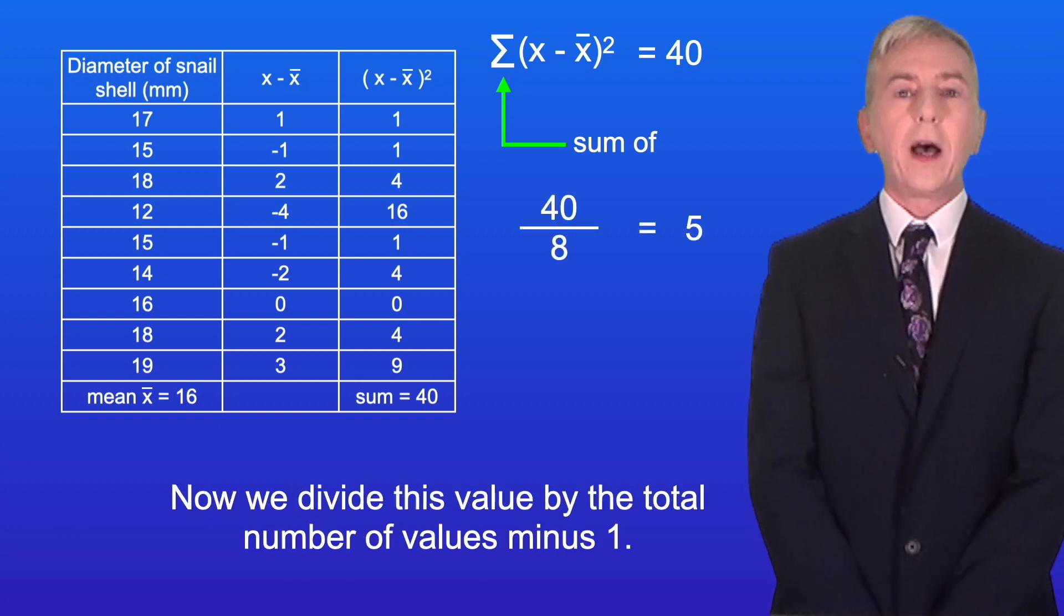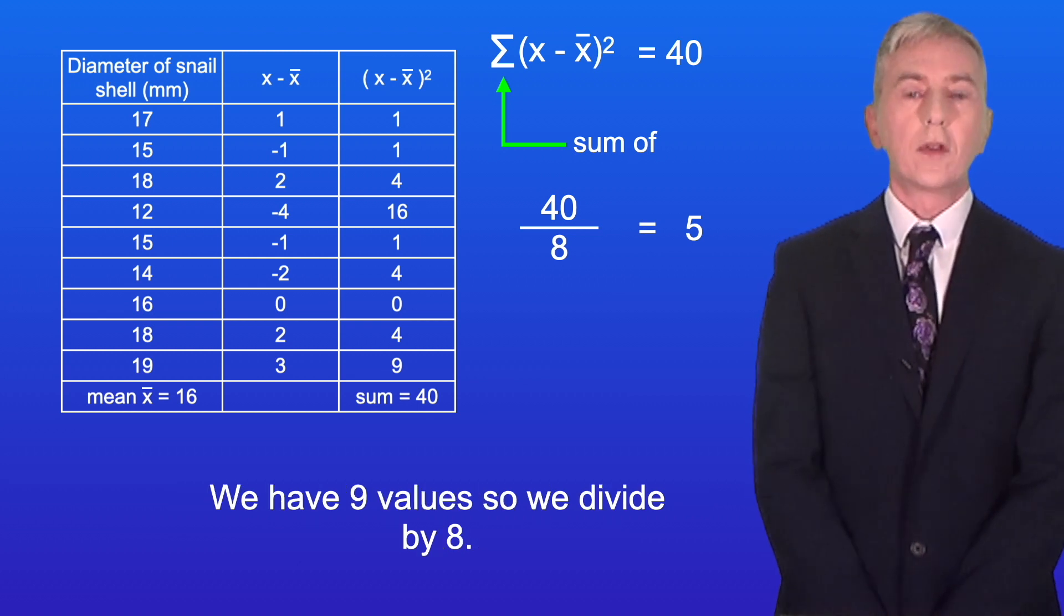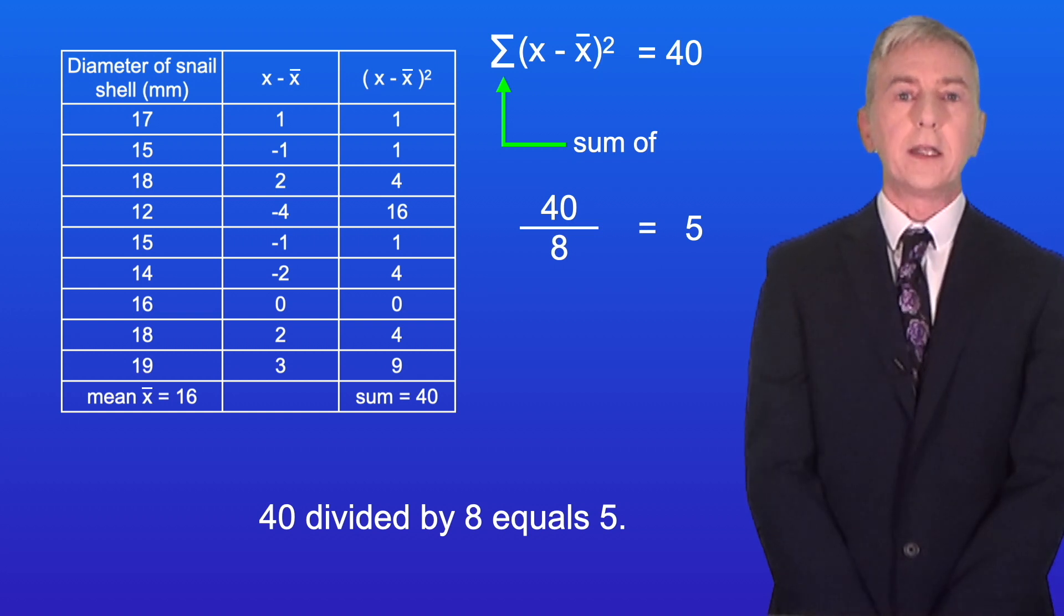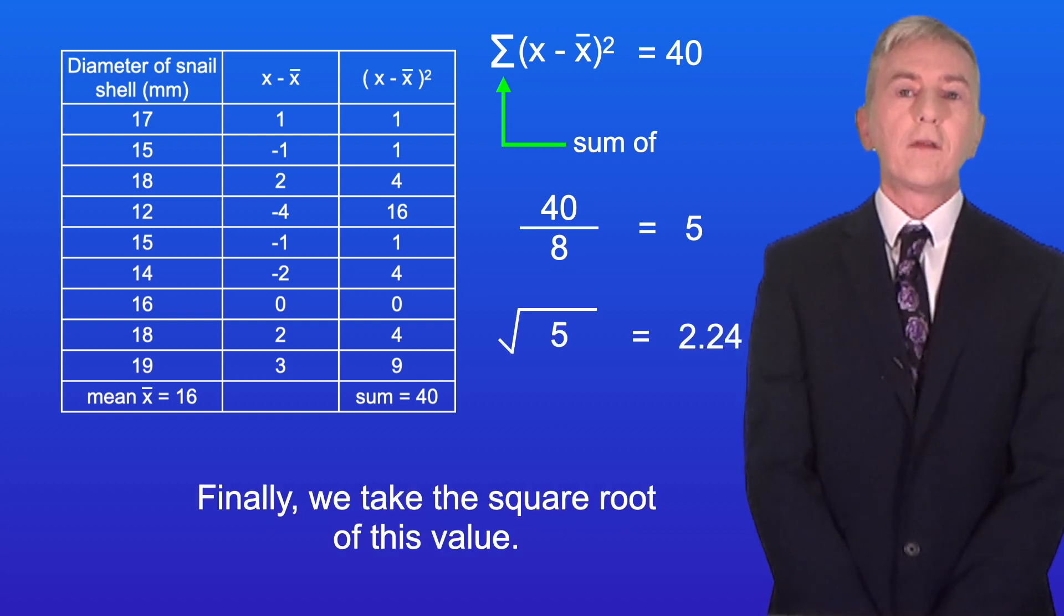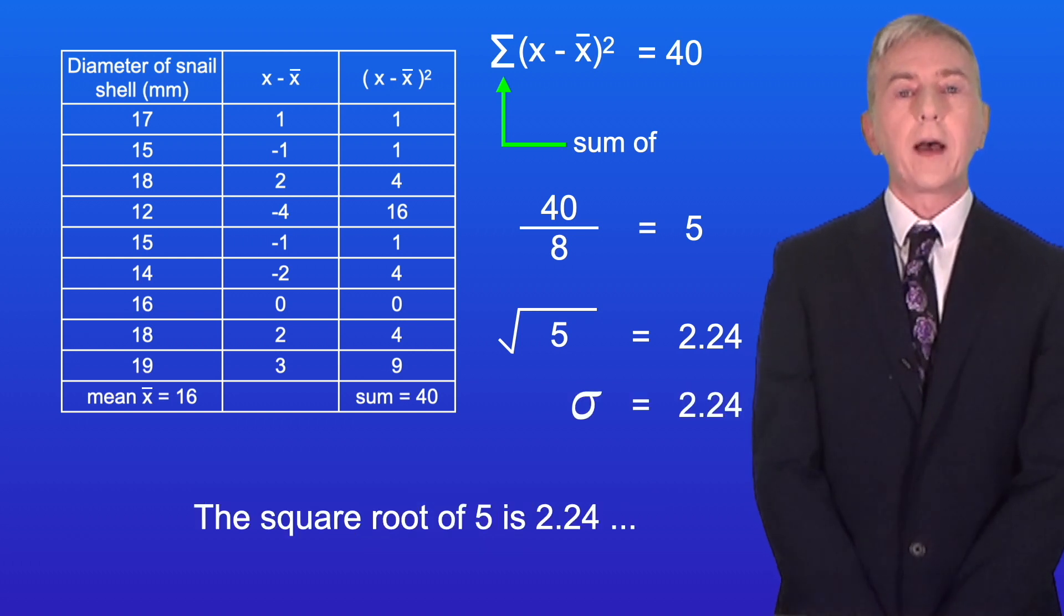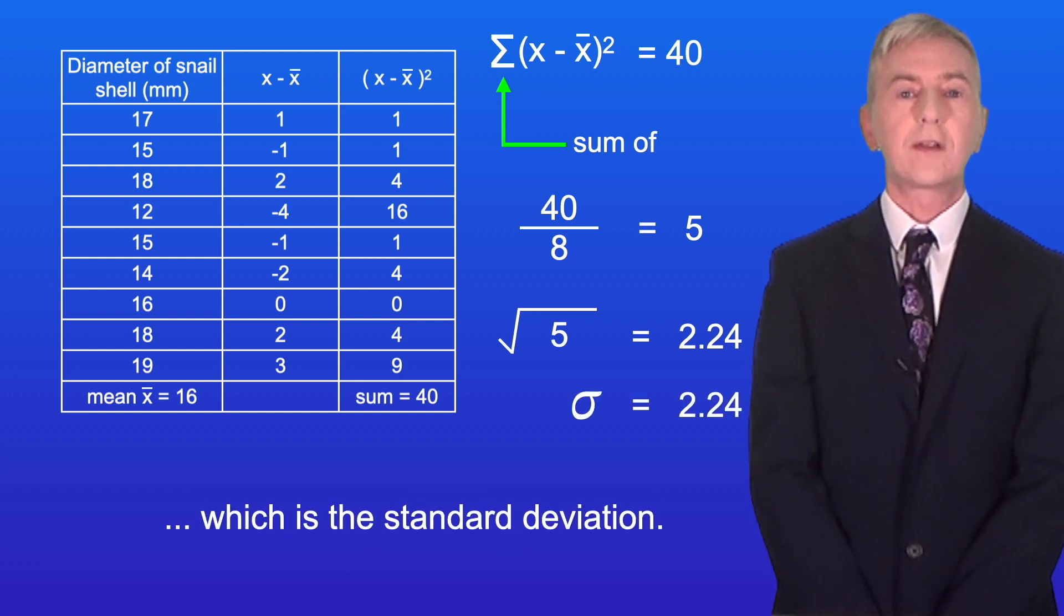Now we divide this value by the total number of values minus one. We have nine values, so we divide by eight. 40 divided by 8 equals 5. And finally we take the square root of this value. The square root of 5 is 2.24, which is the standard deviation.